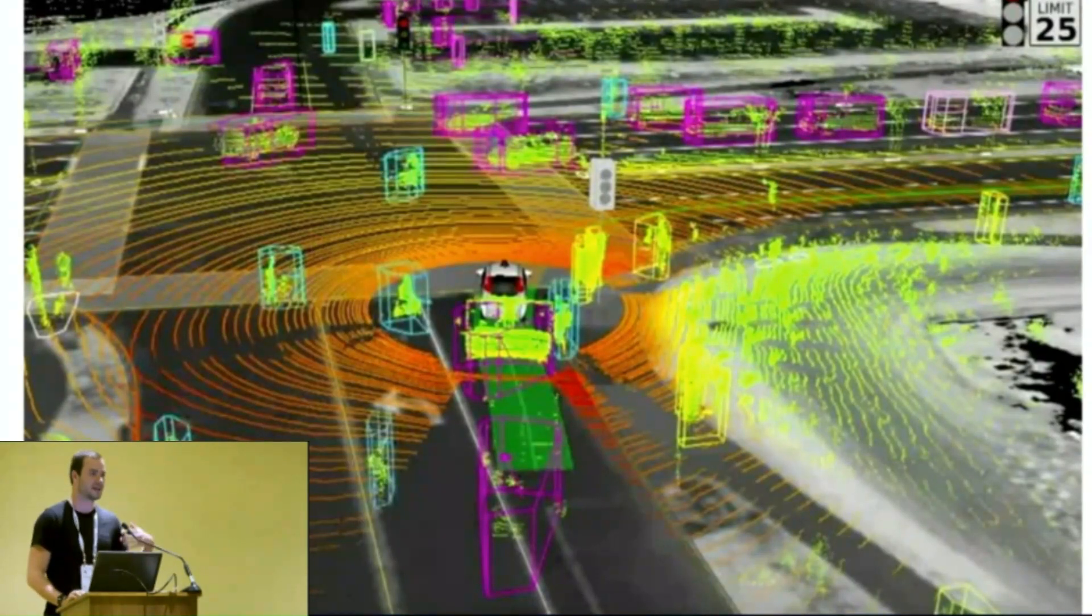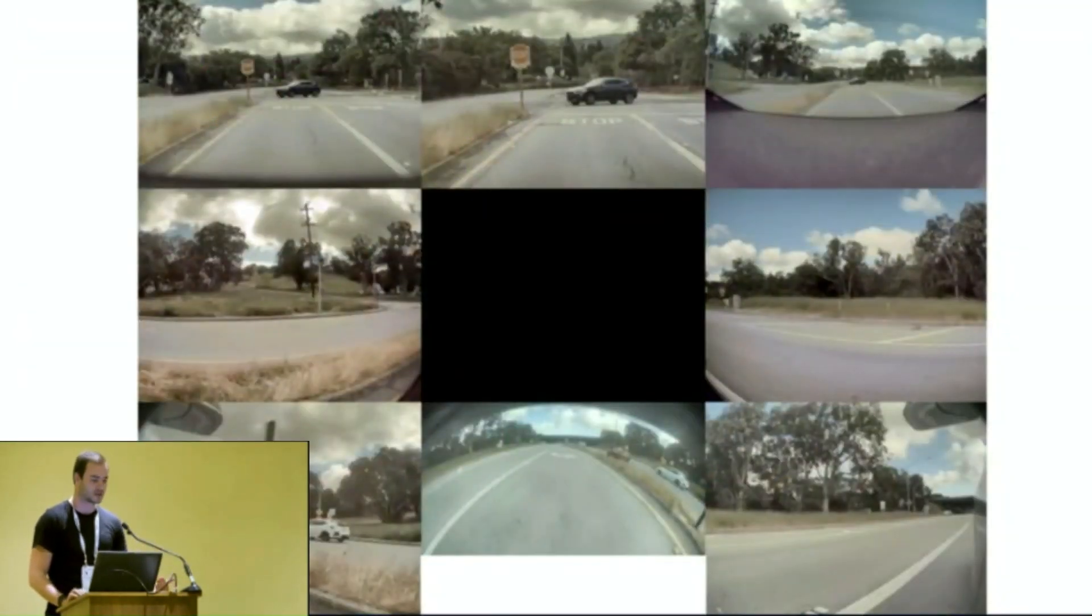For us, this looks very different, because we don't have any high-definition maps, we do not use LiDAR, we rely primarily on vision. What we do have instead is we have eight cameras that are pointed in the 360 around the car, and we obtain video streams from all those cameras, and we parse them using neural networks, and we stitch that up into a view of what's around us in three dimensions in 360.